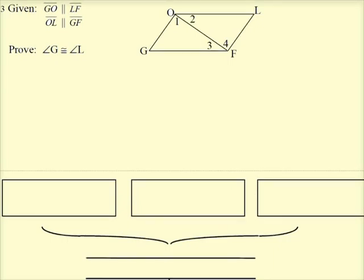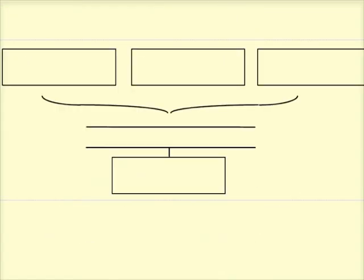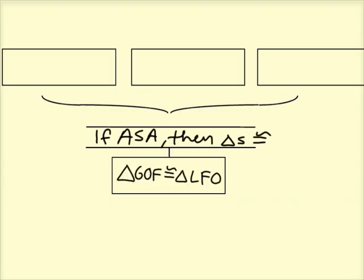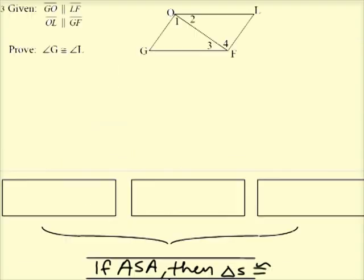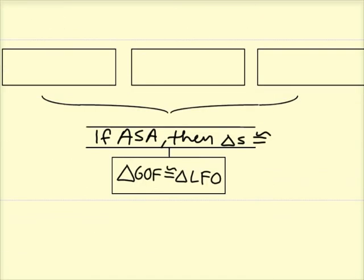All right. So earlier we talked about using the two triangles congruent as a sub-step along the way. So we want to use the fact that GOF and LFO are congruent first. And however, the proof itself, remember, asked us to prove that angles G and L are congruent. And so once we've established that the two triangles themselves are congruent, we can use CPCTC to say that angles G and L are congruent.